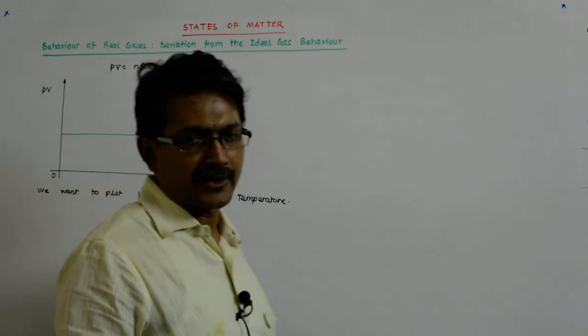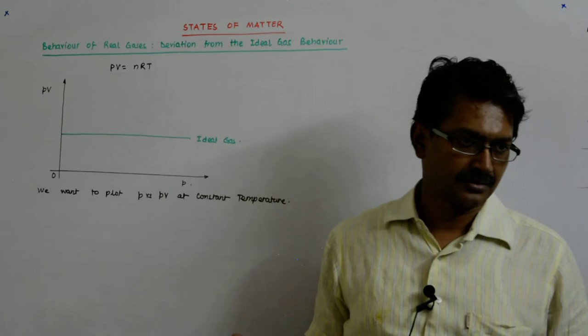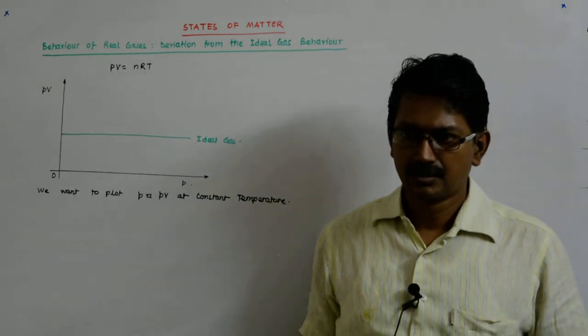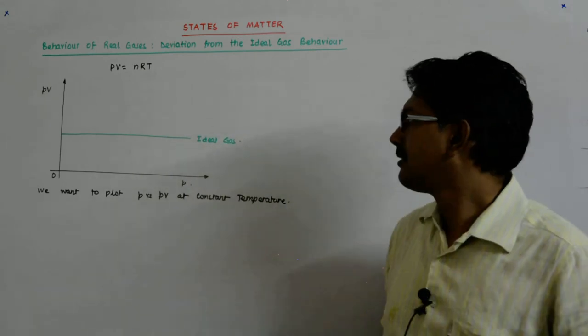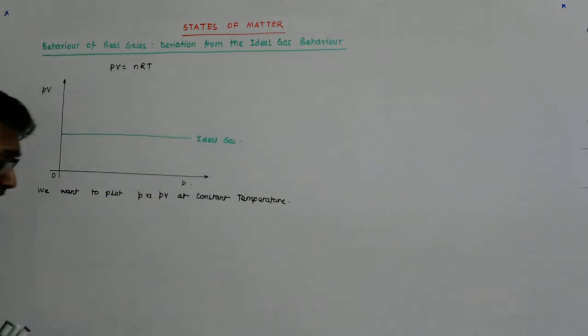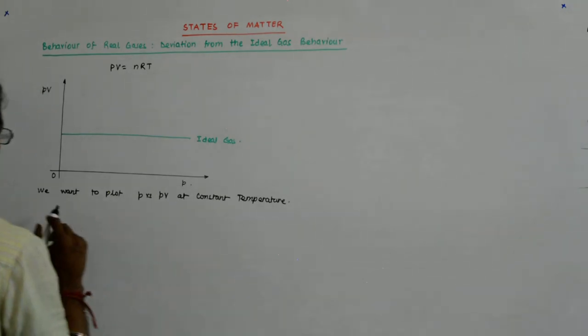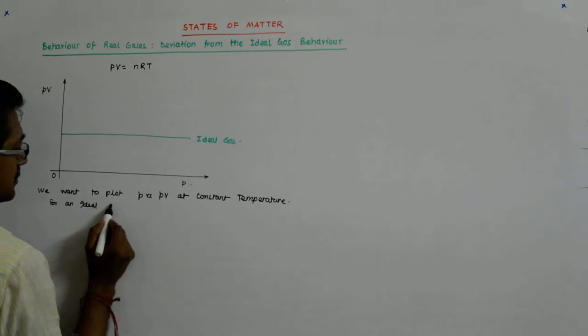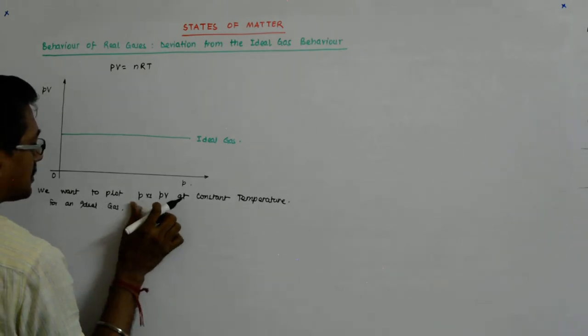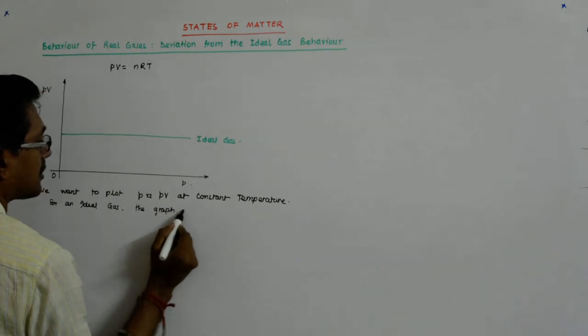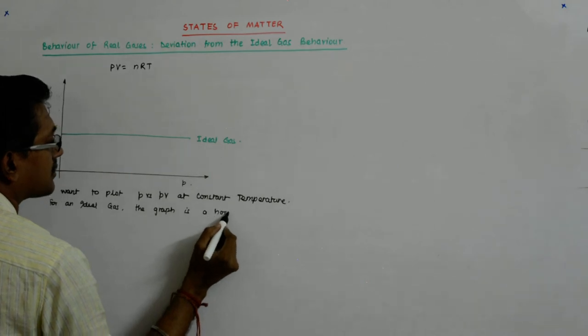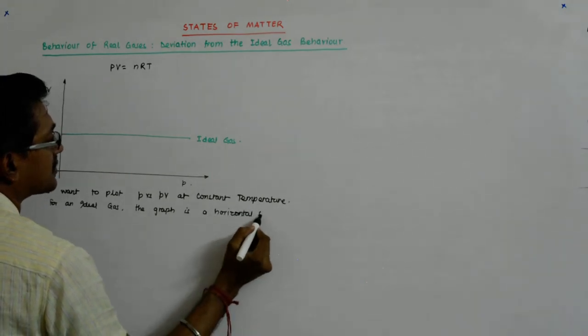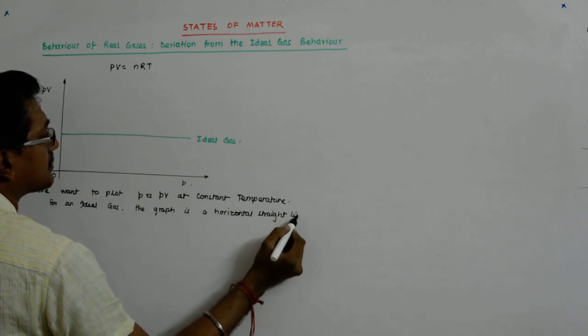Now, what they did was they plotted the real gases and tried to see how it behaved. For an ideal gas, the graph is a horizontal straight line.